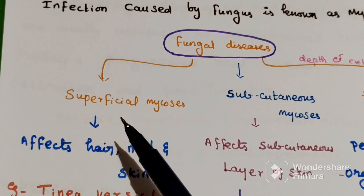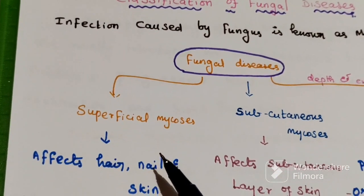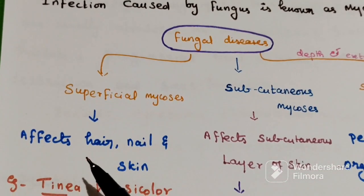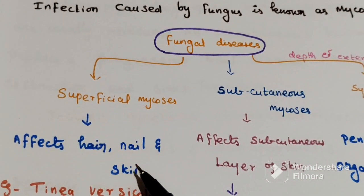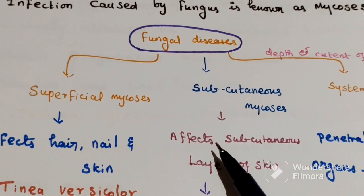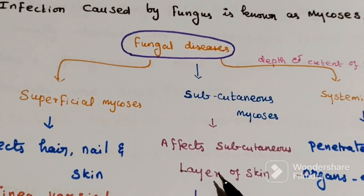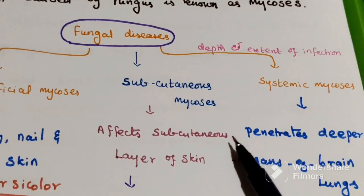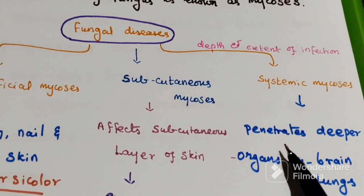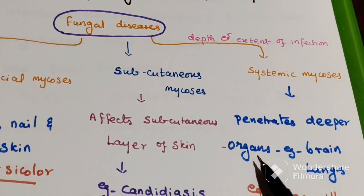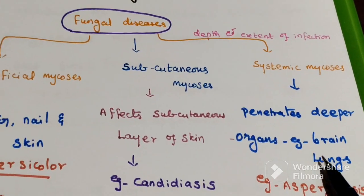Superficial mycosis affects the superficial layer of the body — for example, hair, nails, and skin. Subcutaneous mycosis affects the subcutaneous layer of skin. Systemic mycosis penetrates deep into the organs — for example, brain and lungs.